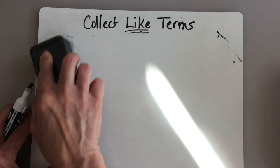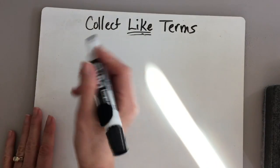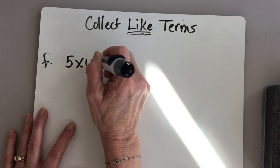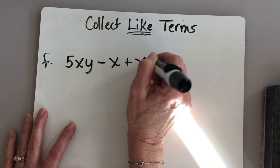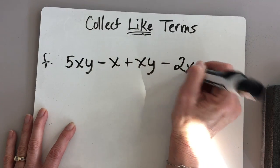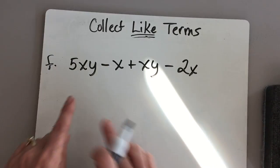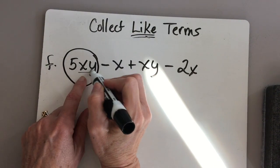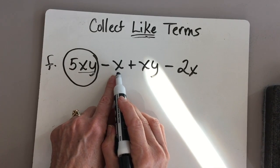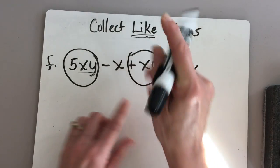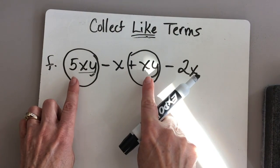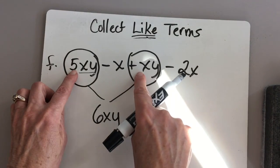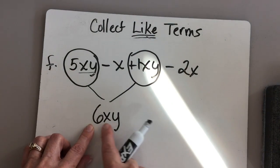Let's do one more — let's do practice problem f: 5xy minus x plus xy minus 2x. We're looking for things that have to be exactly the same. I'll circle the 5xy and look for something that also has an xy. This has an x but not an xy. This has an xy — so I combine that. 5xy plus xy would be 6xy. That's like a 1 in front of it, so it makes 6: 6xy.